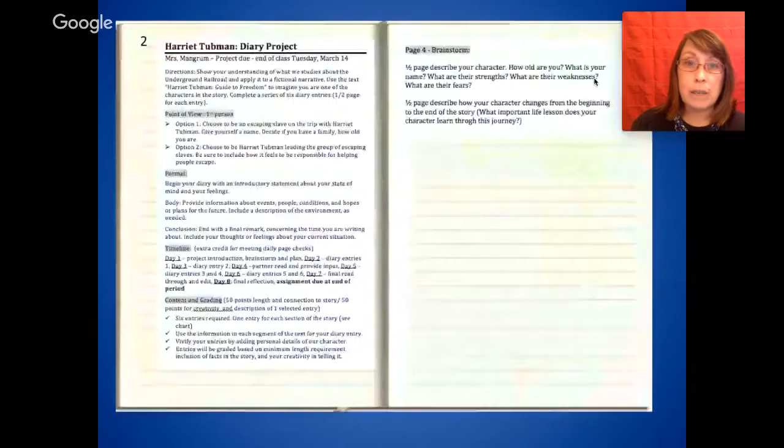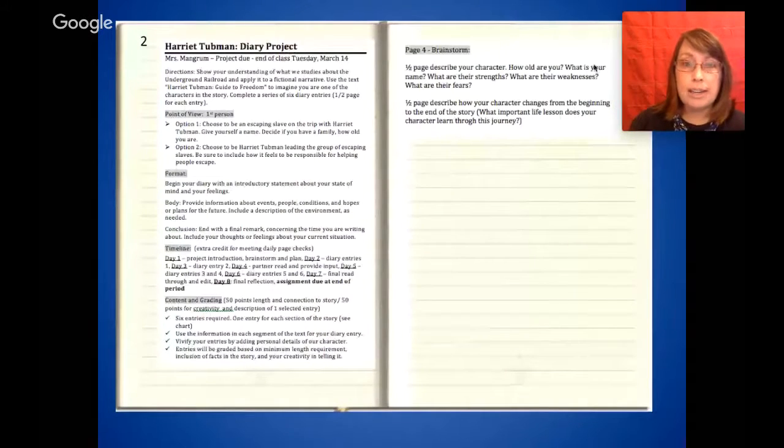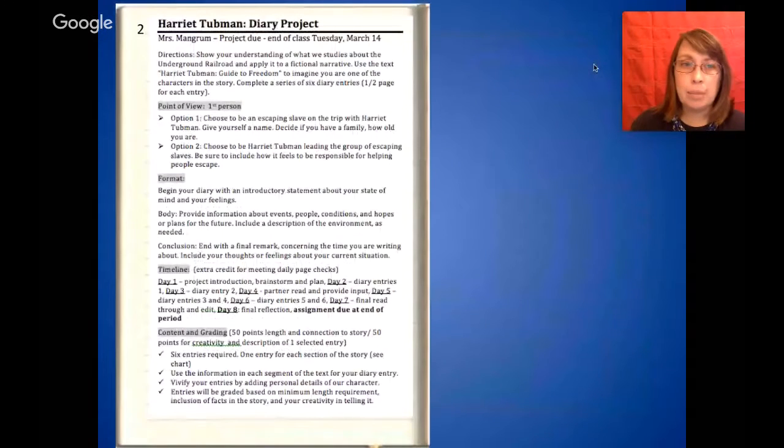So go ahead now and turn to page two. Page two and three look like the following. Let's go ahead and take a closer look at page two. Follow along with me while I read you the instructions. Directions: Show your understanding of what we studied about the Underground Railroad and apply it to a fictional narrative. Use the text Harriet Tubman Guide to Freedom to imagine you are one of the characters in the story. Complete a series of six diary entries. That should be one page for each entry. Go ahead and cross out the half page and put in one page. It's a one page entry.